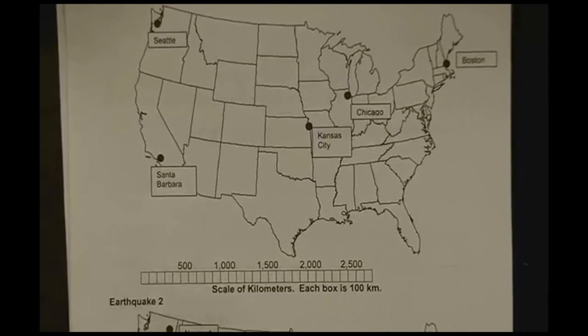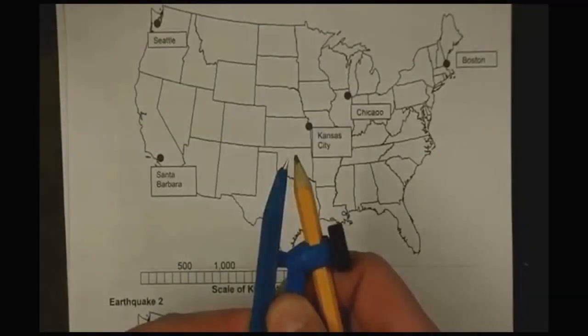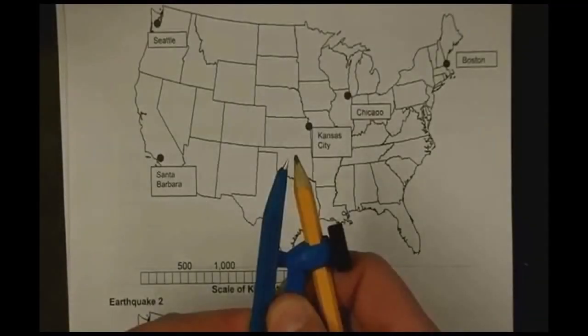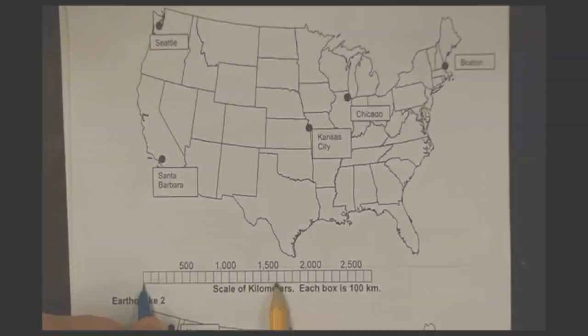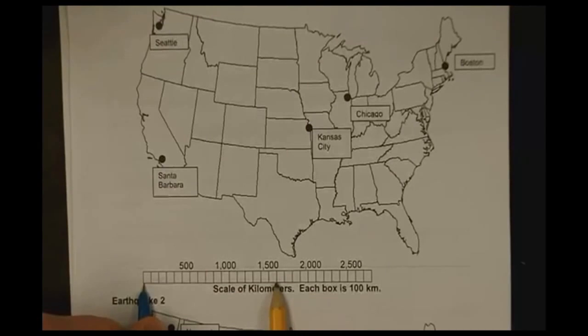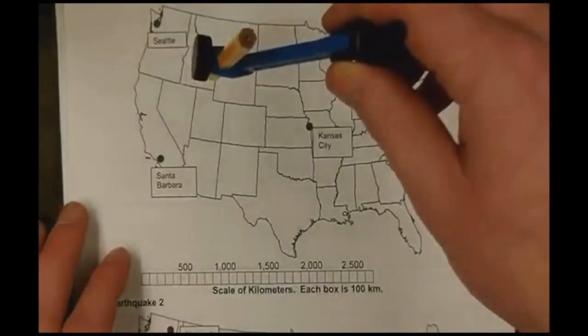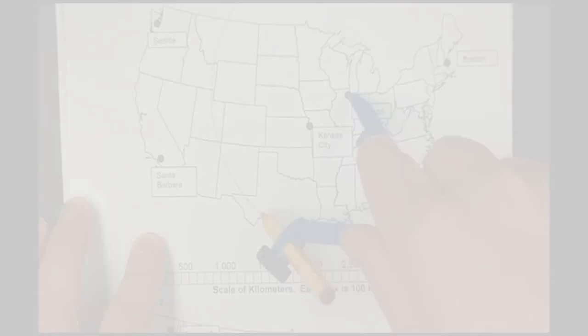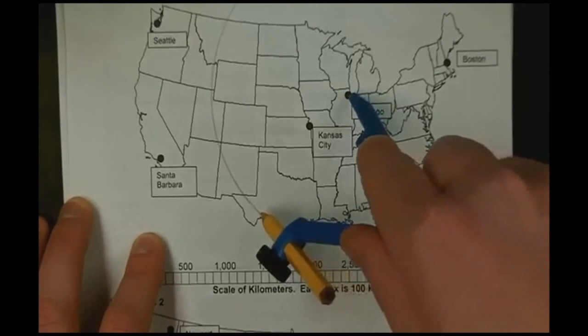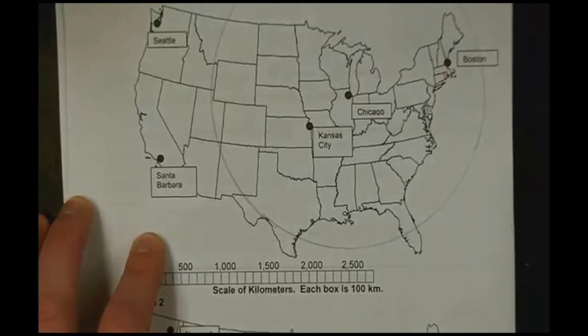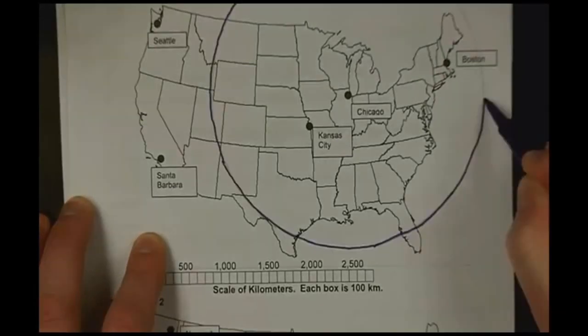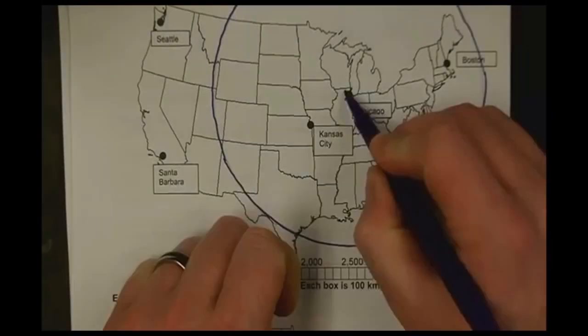First, we have the record of Chicago. We will be needing a compass. And below the map, we have a scaling. After getting the scale, simply draw a circle with Chicago as the center. Do this for the other seismic stations. And the point where these three intersect, that is the location of the epicenter of the earthquake.